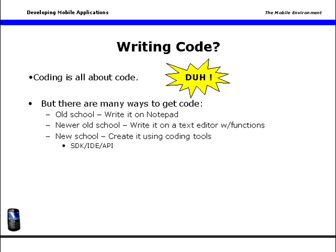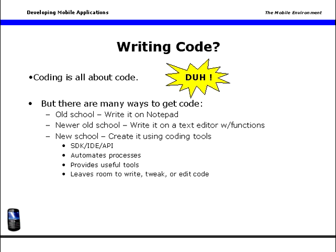You may see your software development tool referred to by several names: SDK, API, IDE. The alphabetics can be a bit confusing until you get used to it. But the main thing is to focus on the tool's capabilities and functions — what the tool will help you do. Good tools automate processes, integrate other functional tools like debuggers, and make it possible to write, tweak, or edit code. We're also starting to see more non-coding tools emerge that make it possible to create code without actually writing it, by using WYSIWYG interfaces.